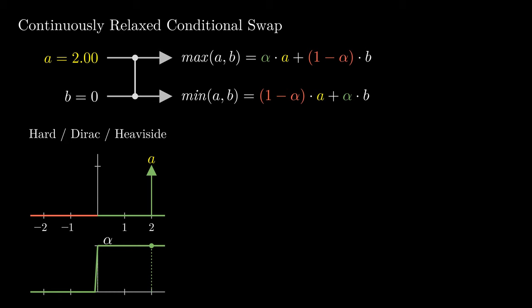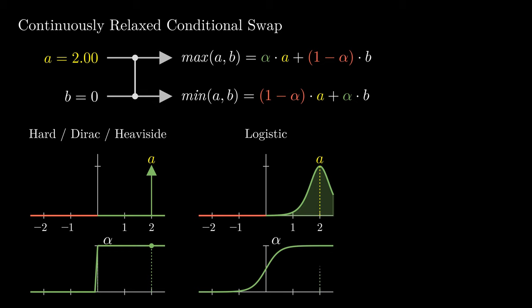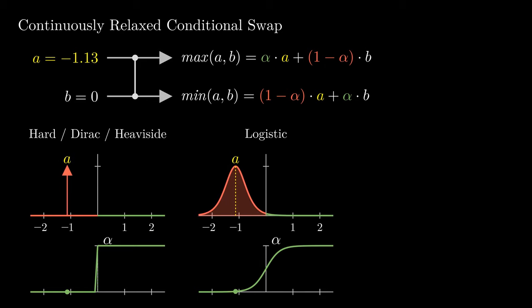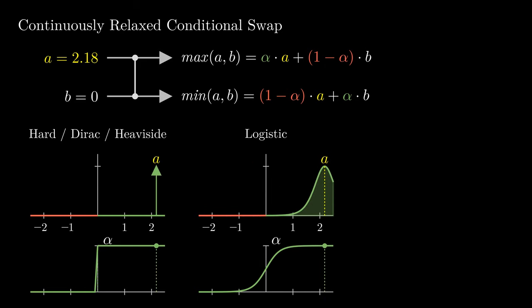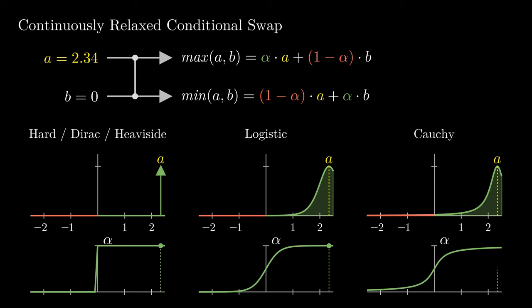However, to make it differentiable, we can perturb the differences by a probability distribution and solve the expectation value in closed form. For example, we can use the logistic distribution, and this lets us compute alpha using the logistic sigmoid function. But we can also use other distributions, such as the Cauchy distribution. Displayed, you can see the PDFs and CDFs of the respective distributions.